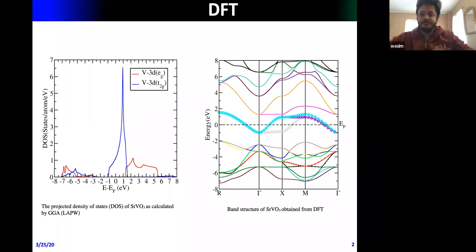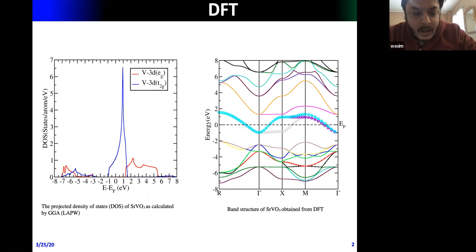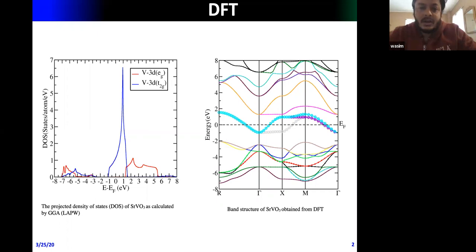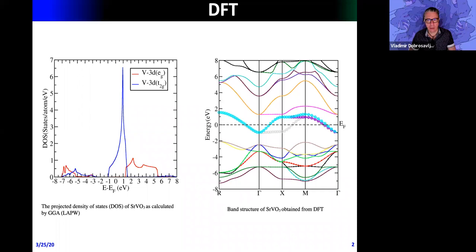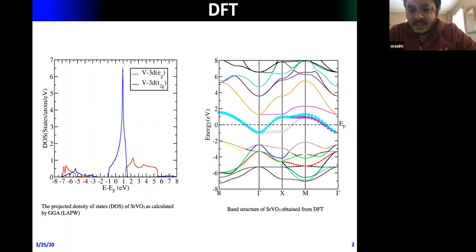In our work we developed an LDA+DMFT scheme. As a test material — a routine benchmark task — we considered SrVO₃, which is a simple material. The crystal structure of SrVO₃ is a simple cubic perovskite (rock salt-like) — a very simple structure.